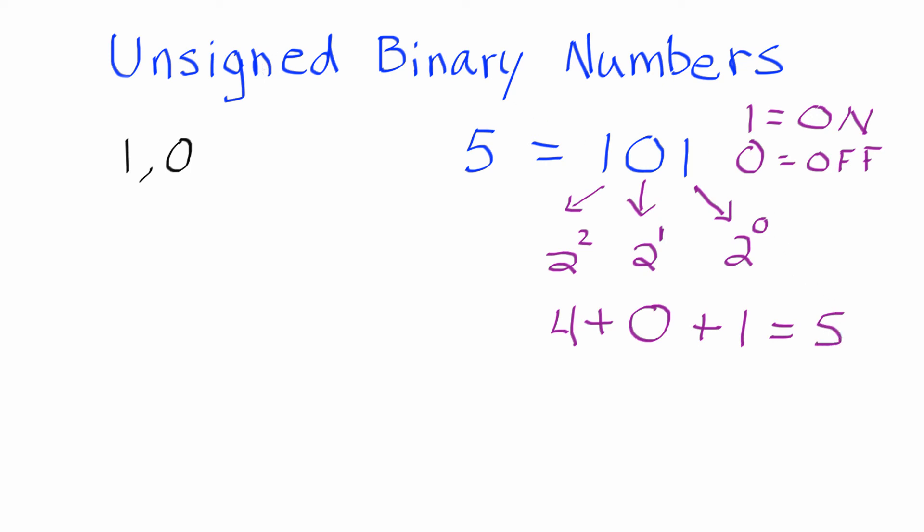So now, basically, an unsigned binary number with 1, 0, 1 represents the whole number 5.